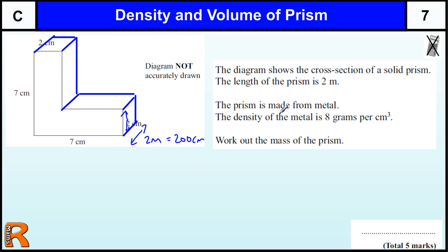The prism is made from metal, the density of the metal is 8 grams per centimetre cube. Work out the mass of the prism. Okay, so the first thing we need to do is work out the volume of the prism. Once we know the volume, we know how much it weighs per centimetre cube, so we need to work out how many centimetre cubes this shape is going to take up.